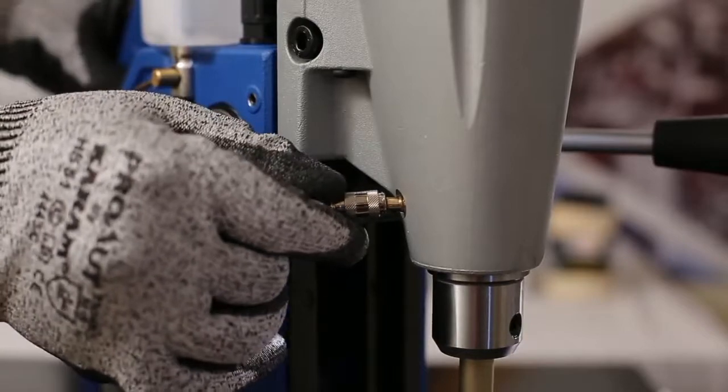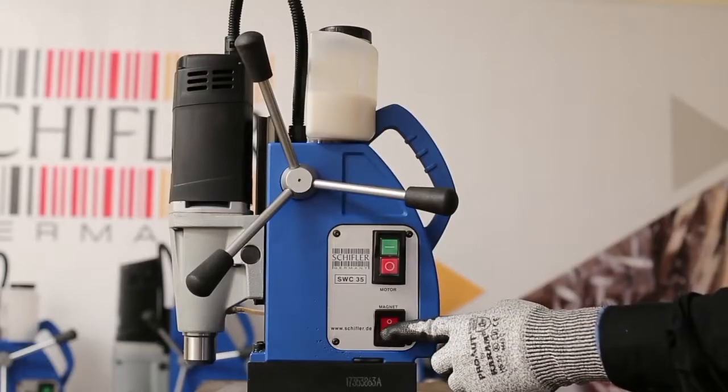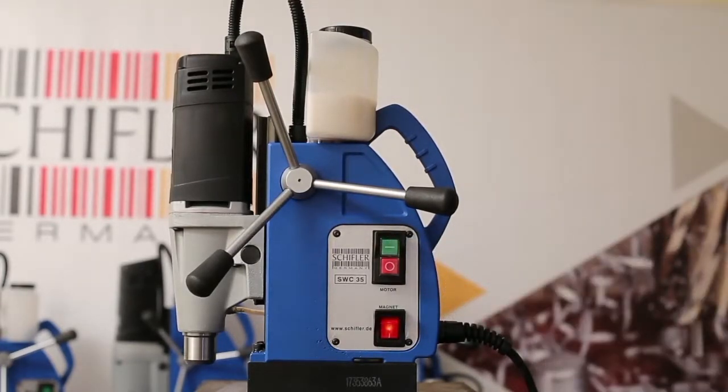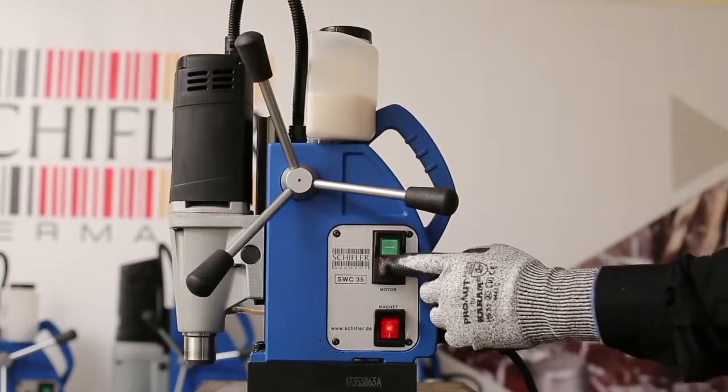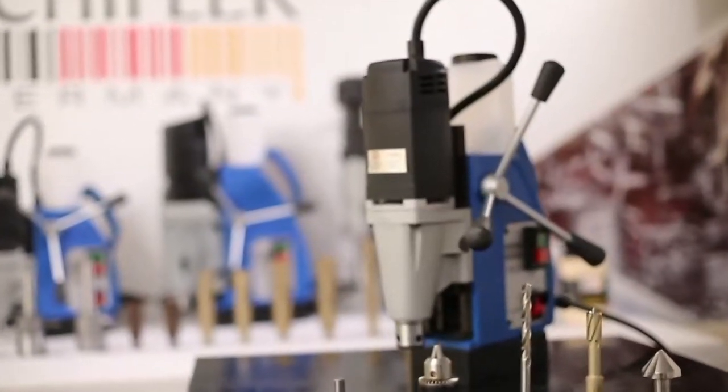Fix coolant nozzle into the arbor. Switch on the magnet followed by motor on and off switch. Now you are ready to use your Schiffler Magnetic Drilling Machine.